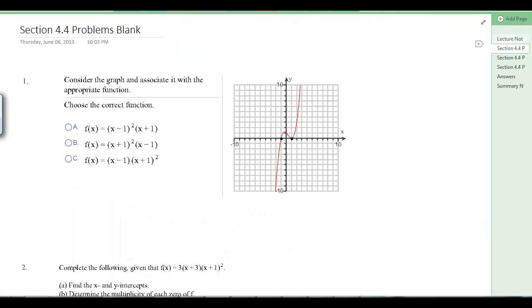Knowing that, let's go look at some problems and see if we can do these. Consider the graph and associate it with the appropriate function. Choose the correct function. We need to look and see where our x-intercepts are. So, we've got x equals 1, x equals negative 1. So, our factors are x minus 1 and x plus 1.